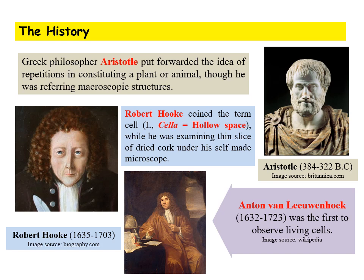Let us briefly look at the history. Even in ancient times, Greek philosopher Aristotle gave the idea of repetition in constituting a plant or animal, though he meant macroscopic structures such as roots, leaves, or flowers common in plants, or segments repeated in animals. Robert Hooke was examining a thin slice of dried cork from a plant named Quercus through his self-made microscope and could see some chambers in that slide. As those were hollow, he named it 'cell' — the Latin word 'cella' meaning hollow space. In fact, what he observed were mere cell walls with some depositions of dried cells only; he could not get into the intracellular structures.